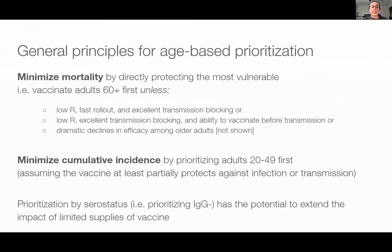Those exceptions are when there is a low reproductive number, the vaccine has really excellent transmission-blocking efficacy, and you either have the ability to roll out the vaccine quickly or prior to transmission. If you're in a country in that regime, then an indirect protection approach may be more valuable, at least in the short term. Another result we looked into, which I didn't have a chance to show today, is that if there are dramatic declines in efficacy by age, then an indirect protection approach is once again the way to go. On the other hand, if the goal of vaccination is to minimize cumulative incidence and you have a vaccine that at least partially blocks infection or transmission, then prioritizing younger adults — age 20 to 49 — is the best way to go about that.